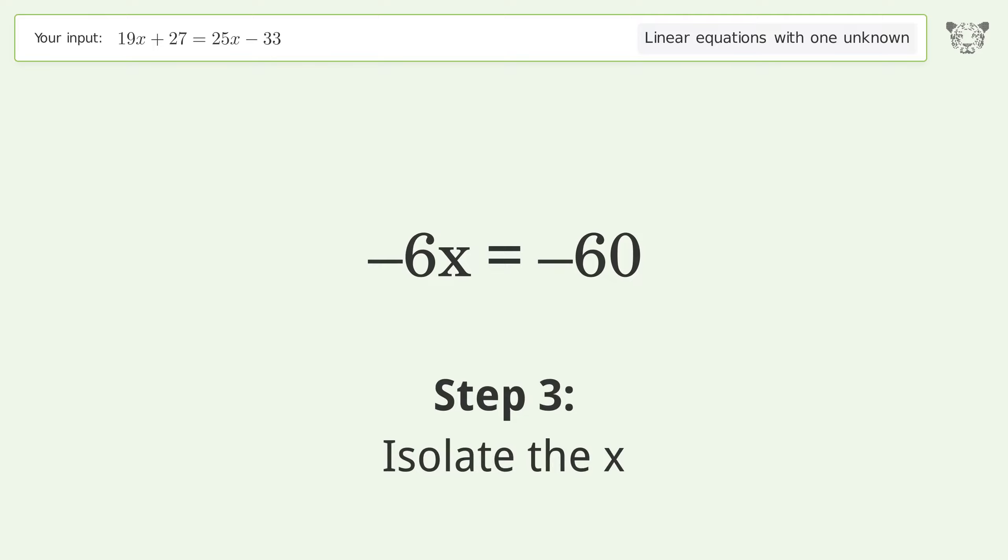Isolate the x. Divide both sides by negative 6. Cancel out the negatives.